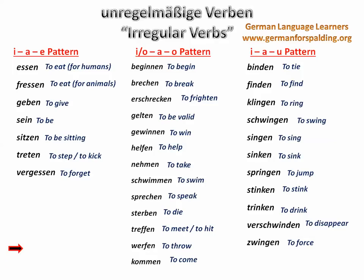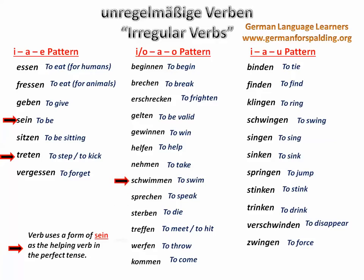In most cases in the present perfect tense in German, you're going to use a helping verb, and in most cases that helping verb is haben. For example, ich habe einen Hamburger gegessen; du hast mir das Buch gegeben. But for some verbs, they will use sein as a helping verb. From this list, the verbs that use sein are: sein itself, treten, schwimmen, sterben, kommen, sinken, springen, and verschwinden.